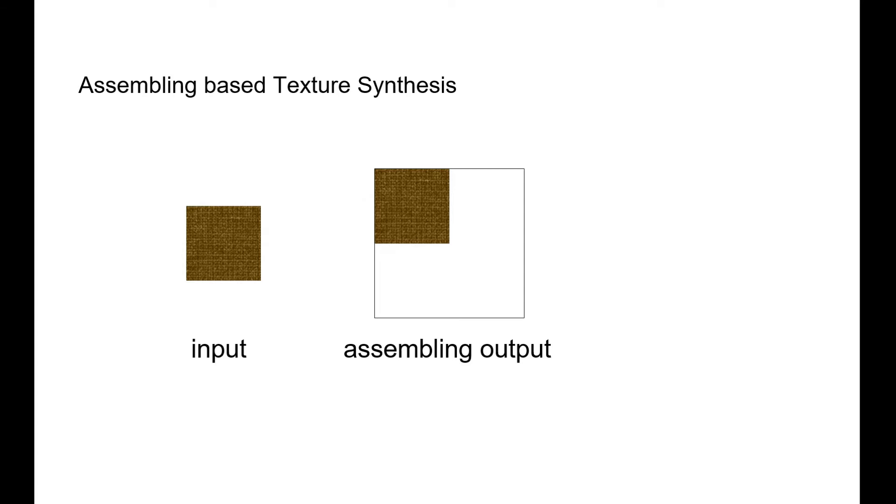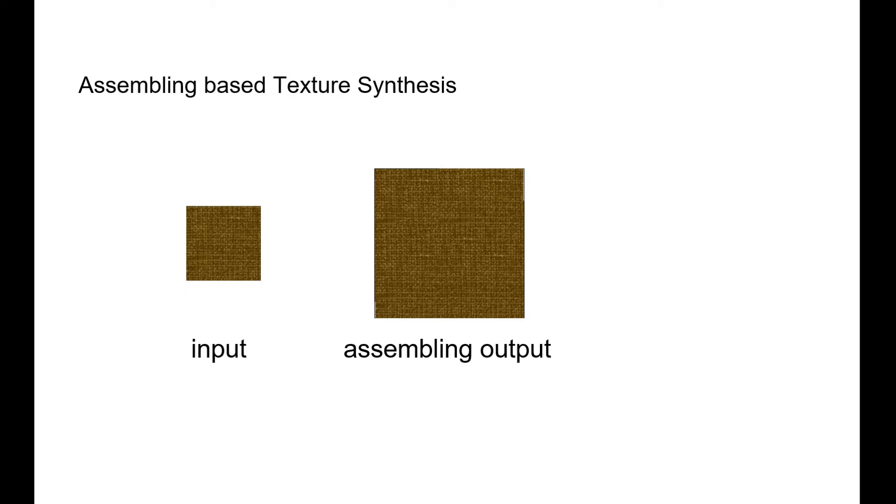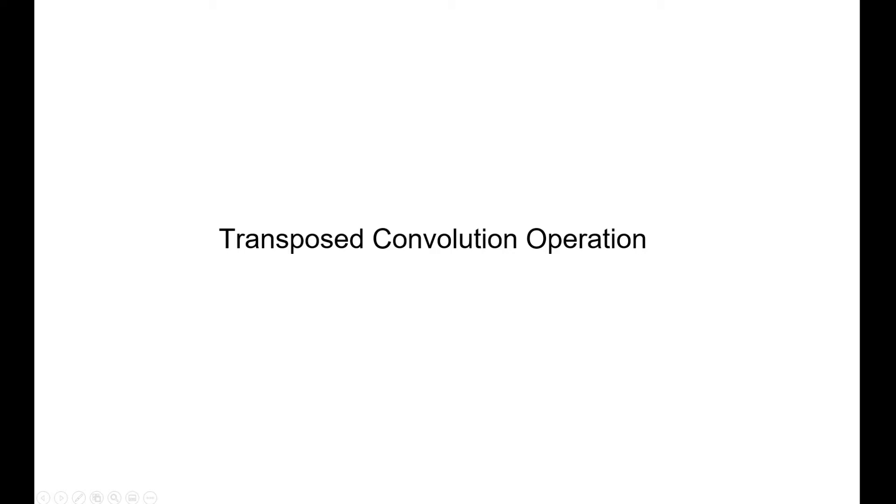The displaced copies are then assembled to grow the output image. This process is repeated until the output reaches the target size. On the other hand, we find that the transposed convolution operation can also perform such displacement and assembling behaviors.